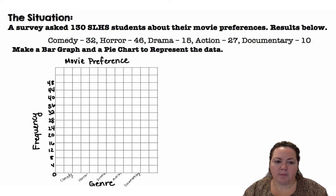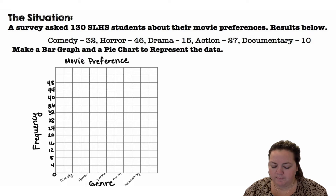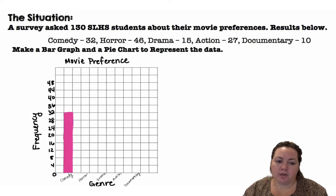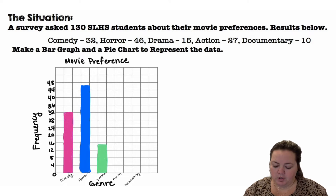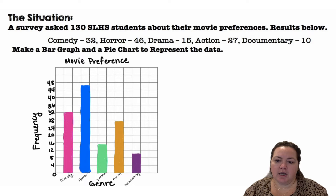I labeled my different genres: comedy, horror, drama, action, and documentary. Then we simply go up to 32 for comedy, 46 for horror, 15 for drama, 27 for action, and 10 for documentary. And that's a bar graph.